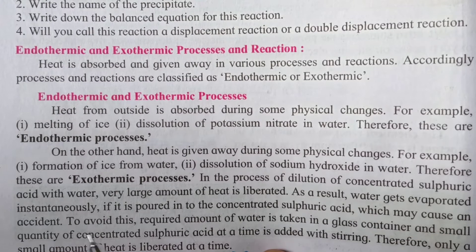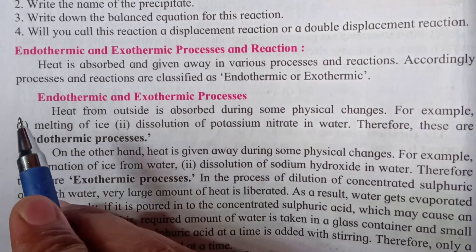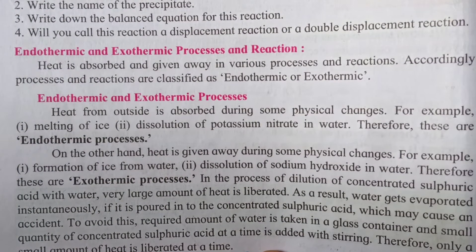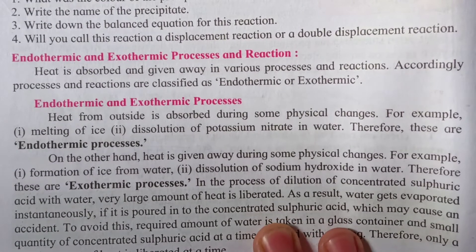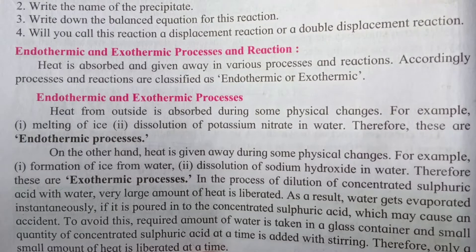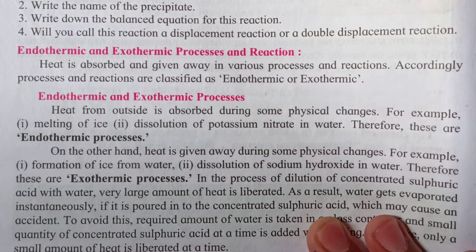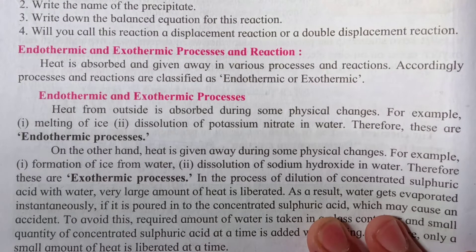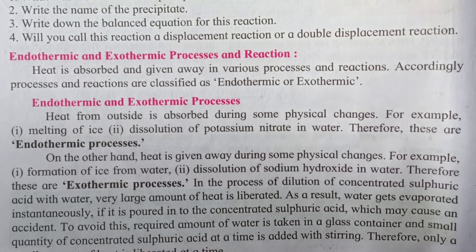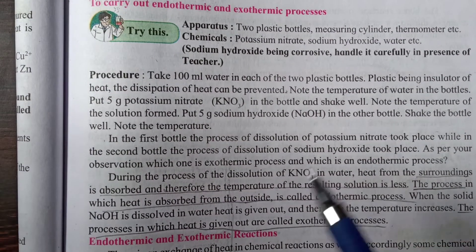During the process of dilution of concentrated sulfuric acid with water, a very large amount of heat is liberated. A lot of heat is liberated from the water as it converts to ice. To avoid accidents, the required amount of water is taken in a glass container and a small quantity of concentrated sulfuric acid is added at a time with stirring, so that only a small amount of heat is liberated at a time.